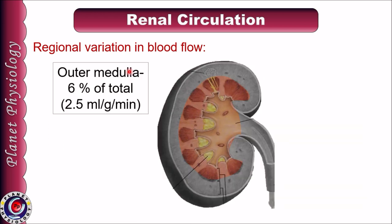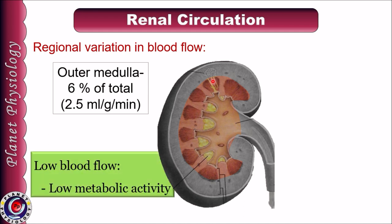The medulla receives the remaining 7% of the renal blood flow. The outer medulla receives 6% of the total renal blood flow, which comes to 2.5 ml per gram of kidney per minute. This blood flow is sufficient to support the metabolic activities of the loop of Henle.